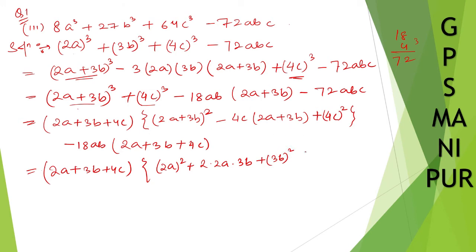a square plus twice ab plus b square. If you multiply this one it will be minus 4 times 8, ac, minus into plus minus 4 times 12, bc, plus 4 times 16 c square. And if here this one whole taken common so minus 18ab.